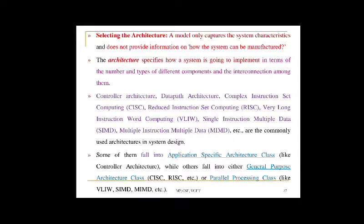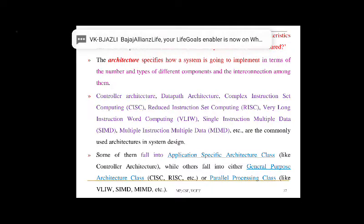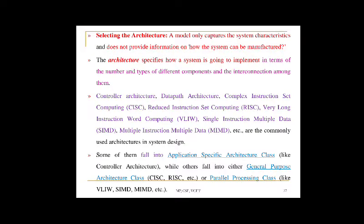The controller architecture implements the finite state machine model using a state register and two combinational circuits. The state register holds the present state, and the combinational circuits implement the logic for the next state. The combinational circuit represents the event which triggers transition from one state to the next state.